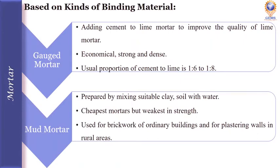Next is gauged mortar or composite mortar. The process of adding cement to lime mortar to improve the quality of lime mortar is called gauging, and that type of mortar is called gauged mortar. It makes lime mortar economical, strong, and dense. The usual proportion of cement to lime by volume is about 1:6 to 1:18 ratio.